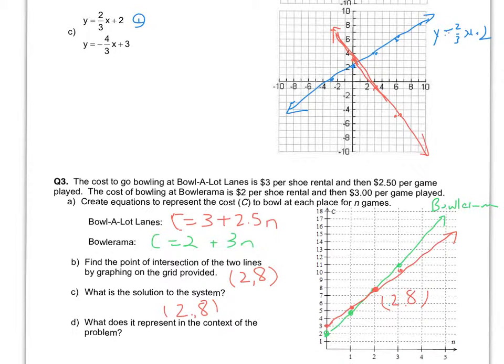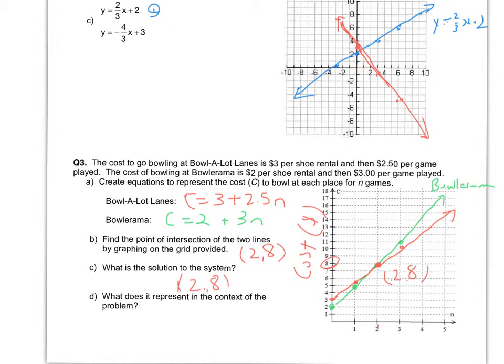And then what does it represent in the context of the problem? It means that for 2 games, they both will cost a total of $8, because this is our cost axis. And on the bottom here is the number of games.